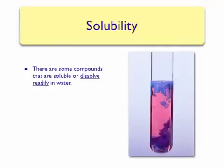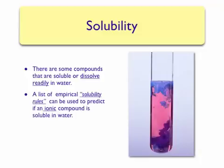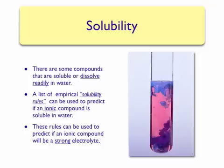It's very important to be able to predict if compounds will be strong or weak electrolytes. One way to predict this is to be able to tell if a compound is able to dissolve in water — we call this the solubility of a compound. For ionic compounds, there is a list of empirical solubility rules we can use to predict if an ionic compound will be soluble in water. If the compound is soluble in water, then it will be a strong electrolyte.